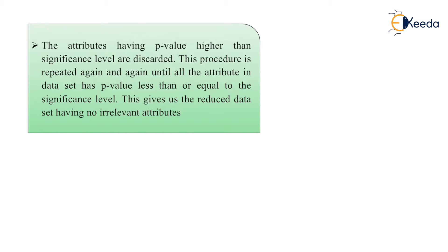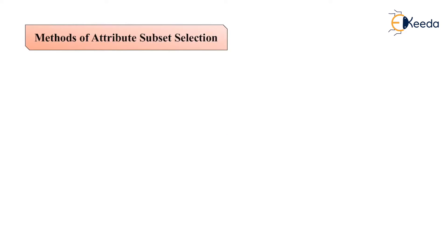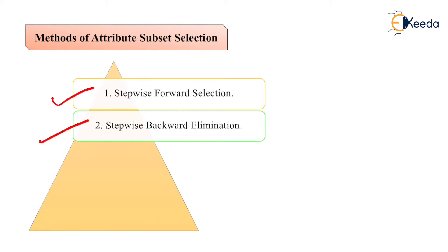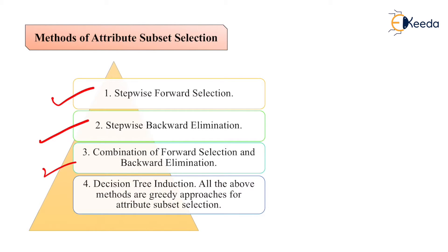Some methods of attribute subset selection: First is stepwise forward selection, second is stepwise backward elimination, third is combination of forward and backward elimination, fourth is decision tree induction.